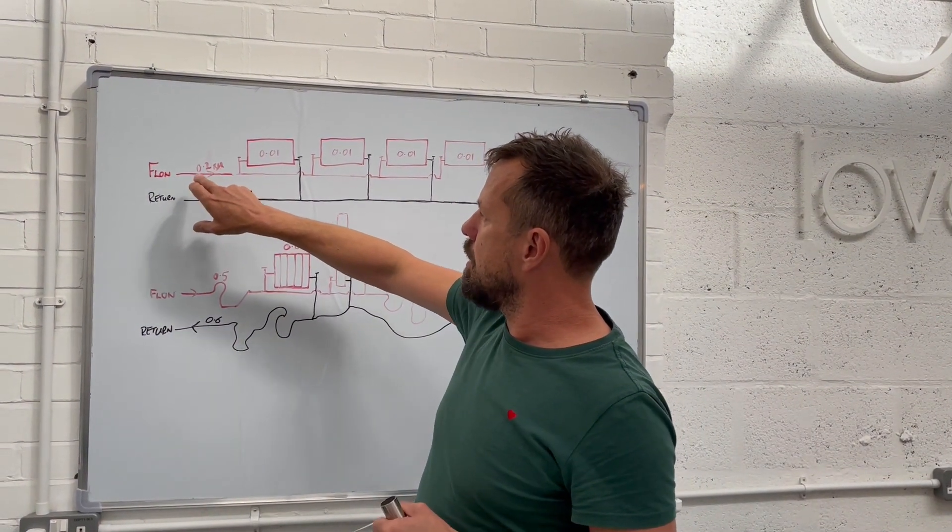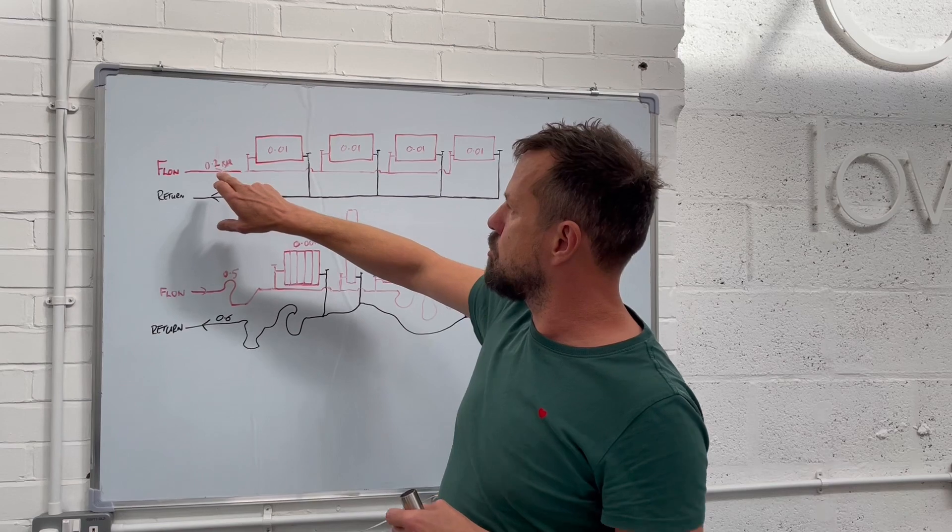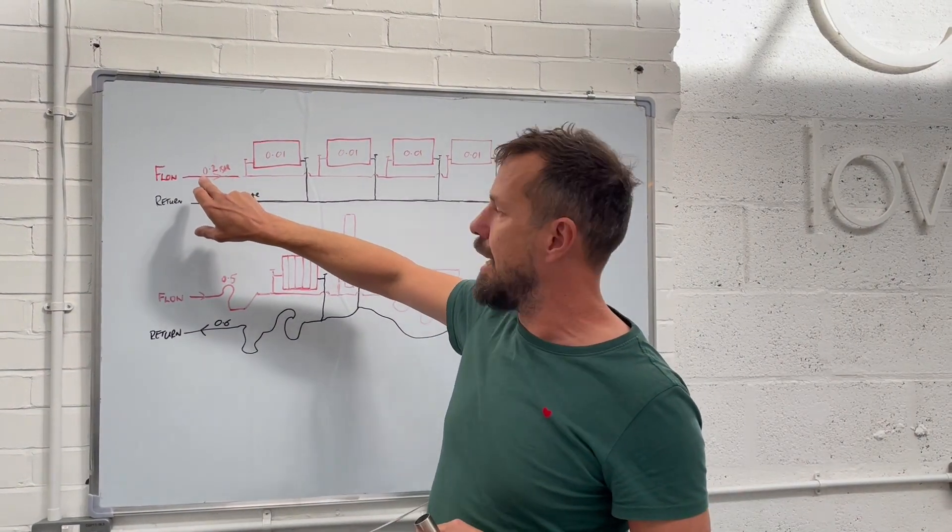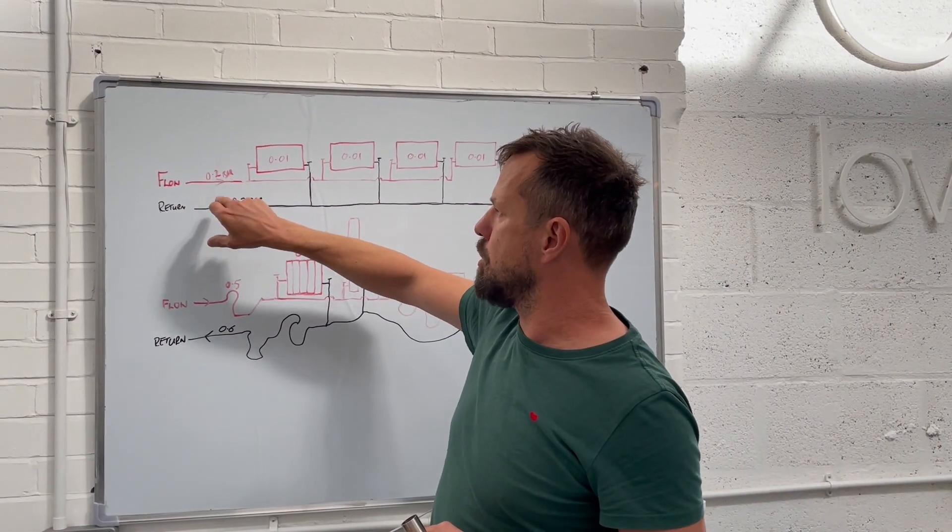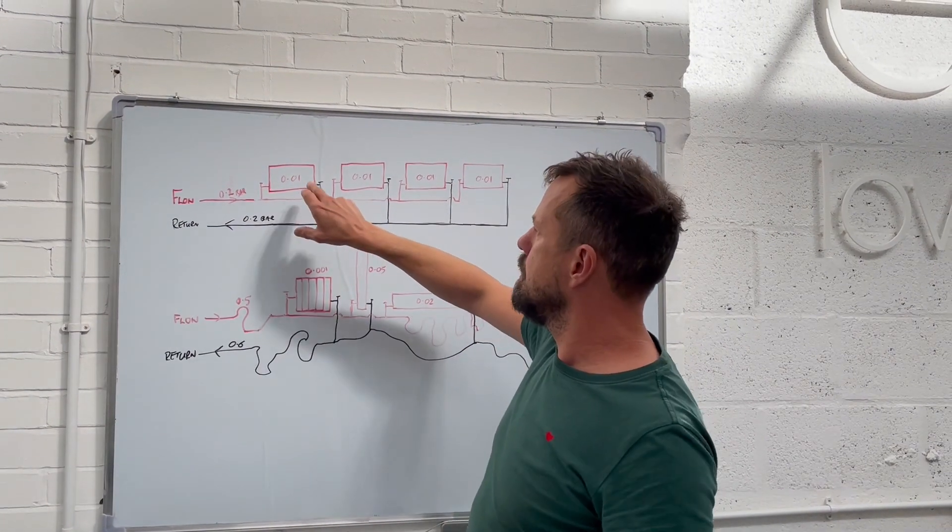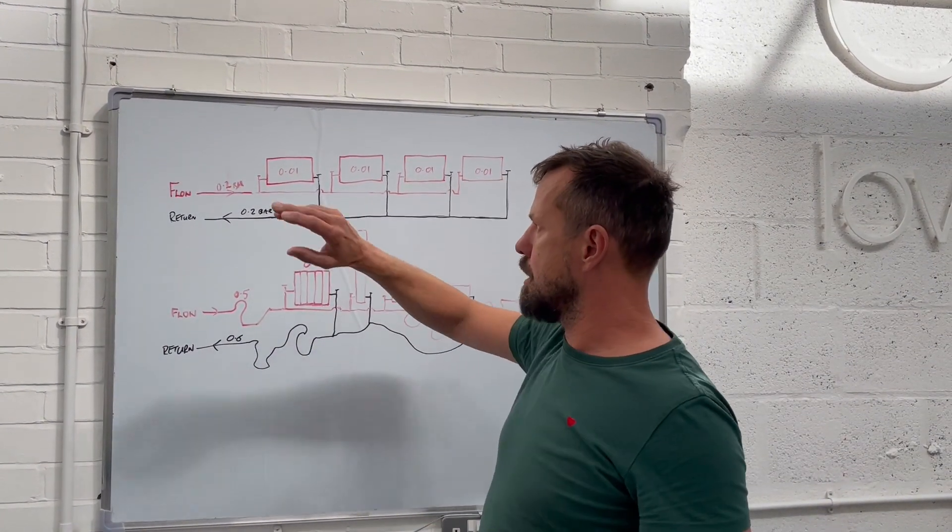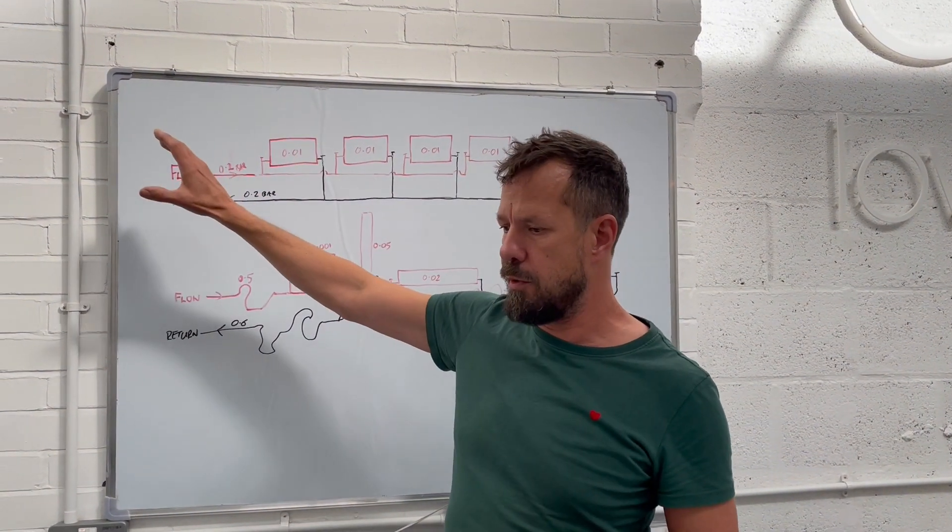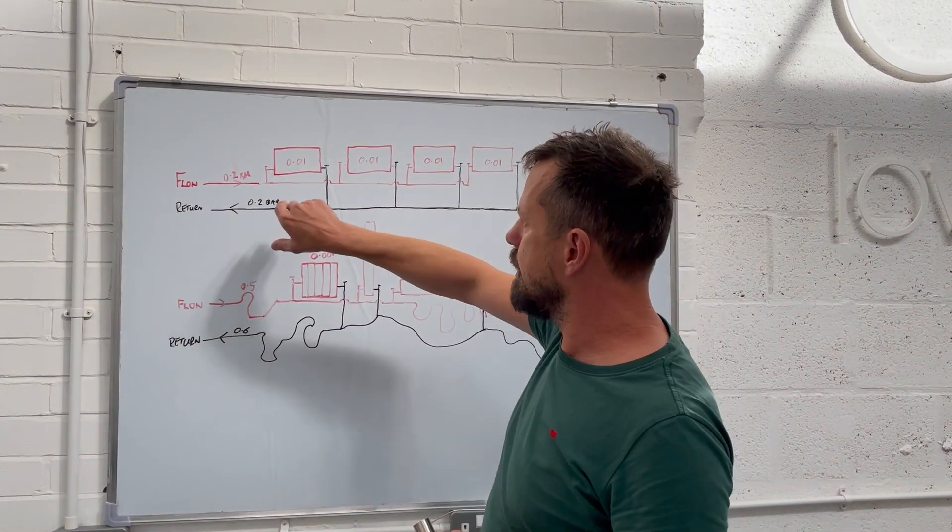On the flow, you have the pressure drop of the pipework added up in total is 0.2 of a bar. Each of these identical radiators is 0.01 of a bar. So that's great. We can account for that when we size our pump. It's really easy.